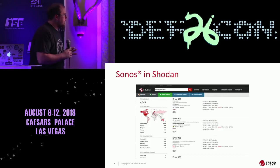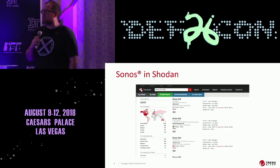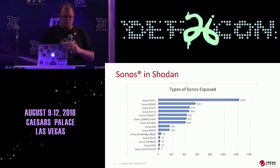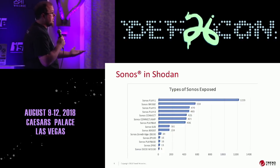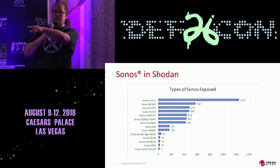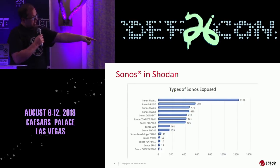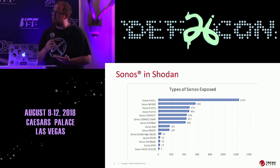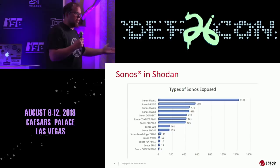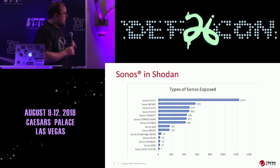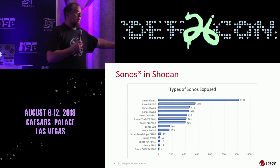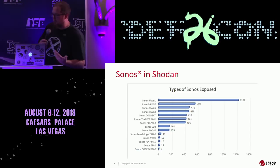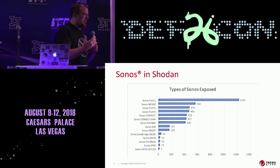The U.S. is the number one place, followed by Sweden, Belgium, the Netherlands, and Norway. The Sonos Play One is the most predominant model exposed online. Right after the Playbase came out — like three weeks later — 16 were already exposed. As people buy these and put them online, they get exposed. How they get online: the Sonos does UPnP, so if your router supports UPnP it pokes a hole for port 1400.